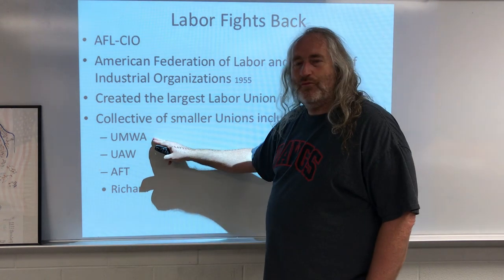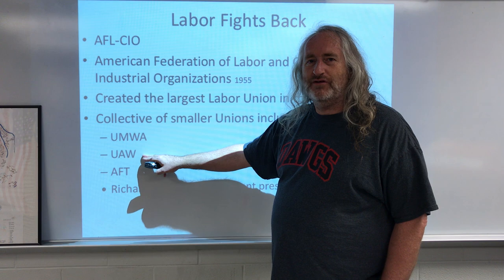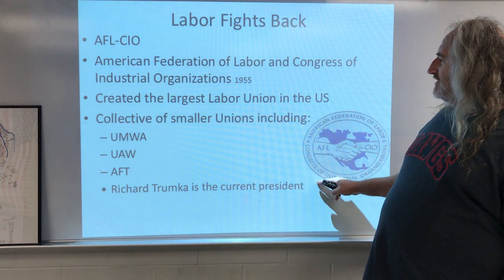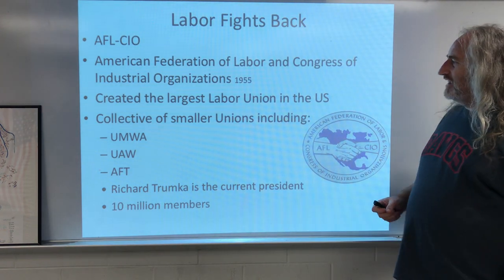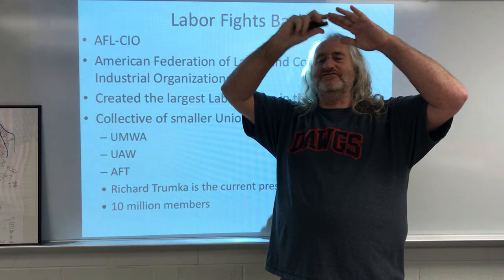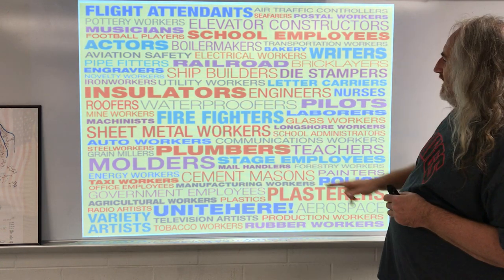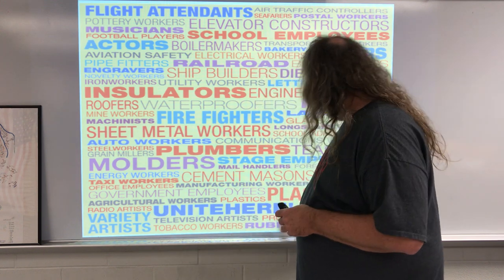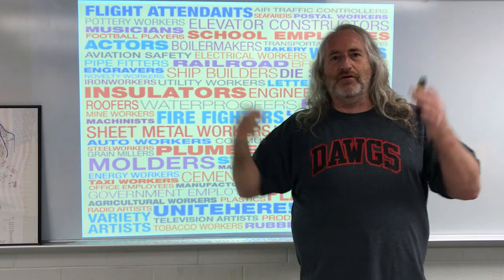Things like the UMWA — United Mine Workers Association — used to be big in Kentucky and West Virginia. The UAW, the United Auto Workers, represents all the people in Detroit building cars. The American Federation of Teachers is a large labor union. The AFL-CIO boasts 10 million members and is like a large umbrella agency over all these smaller unions — everything from plumbers to school employees, iron workers, aviation safety, aerospace workers, police — anything you can think of falls under this umbrella.